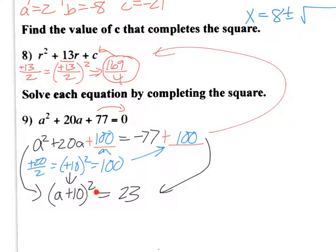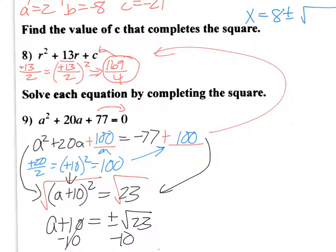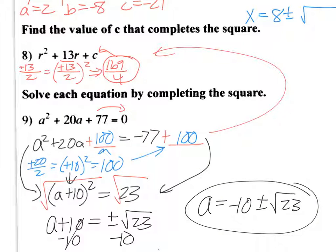Since this is an isolated square, now I take the square root. I get A plus 10 equals. Remember, when we take the square root, we always get a positive negative. Then all I have to do is subtract 10 from both sides. And I end up with A is negative 10 plus or minus square root of 23.